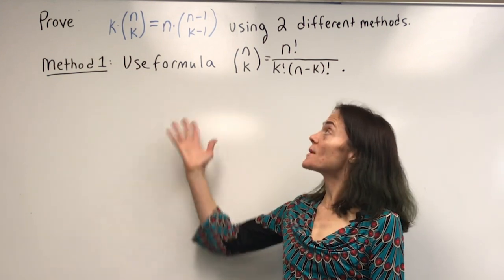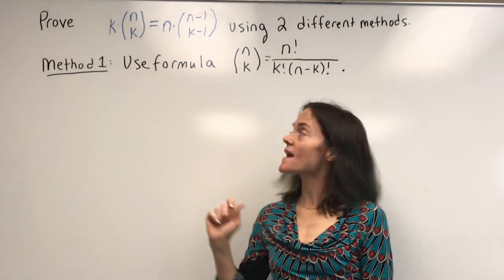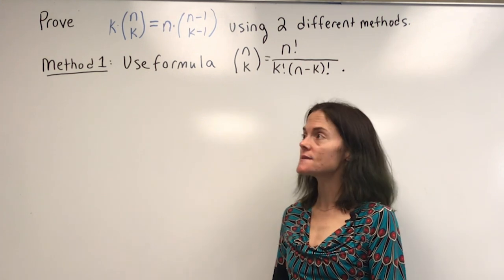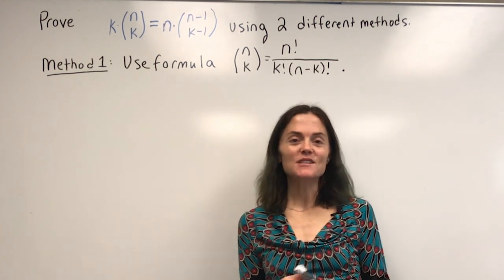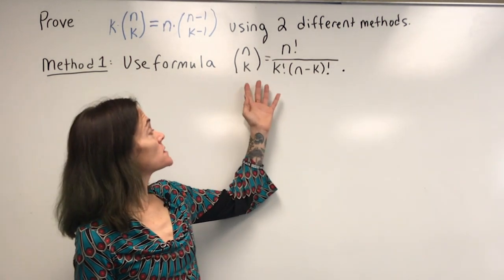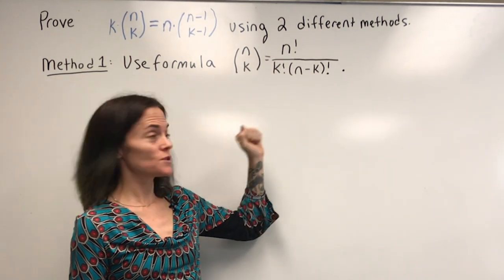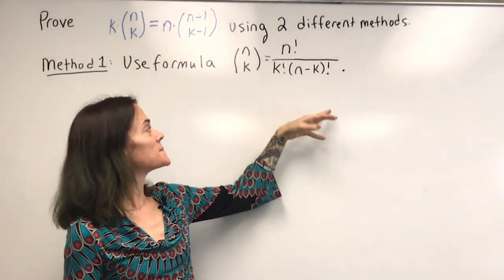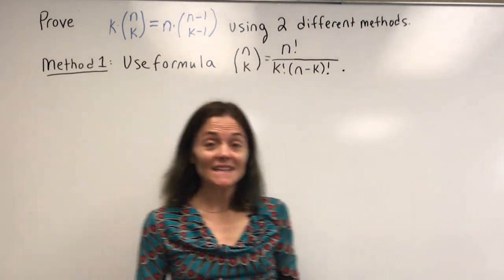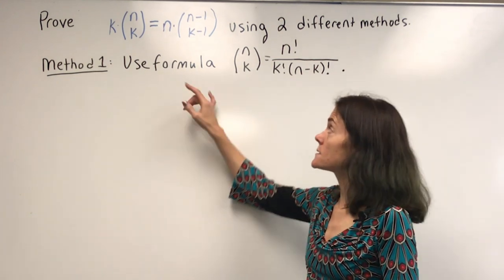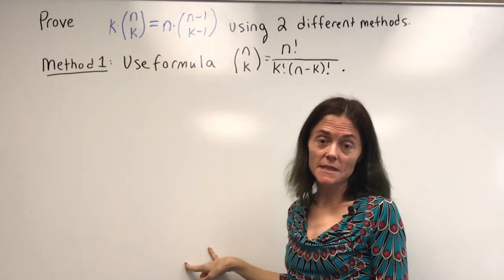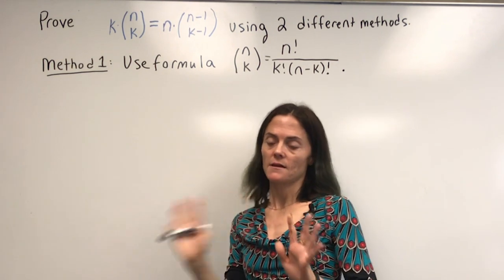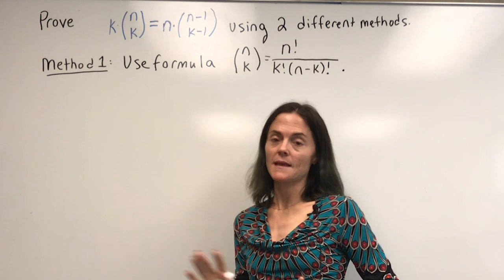I'd like to prove this combinatorial identity two ways. The first might be the easier one to work with because you can just use algebra, and that's where we can directly use the formula for n choose k. I would not start and work with both sides at the same time because it's very easy to confuse yourself and have something messy looking.